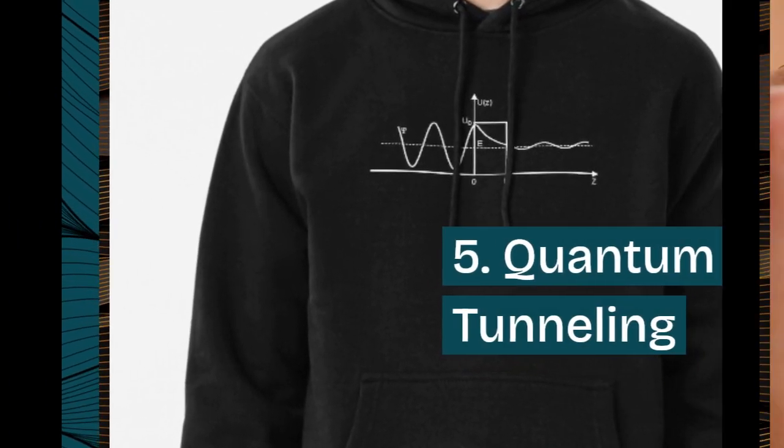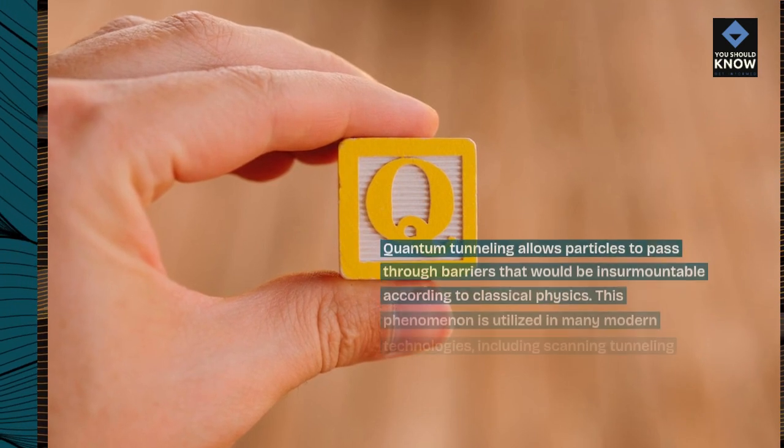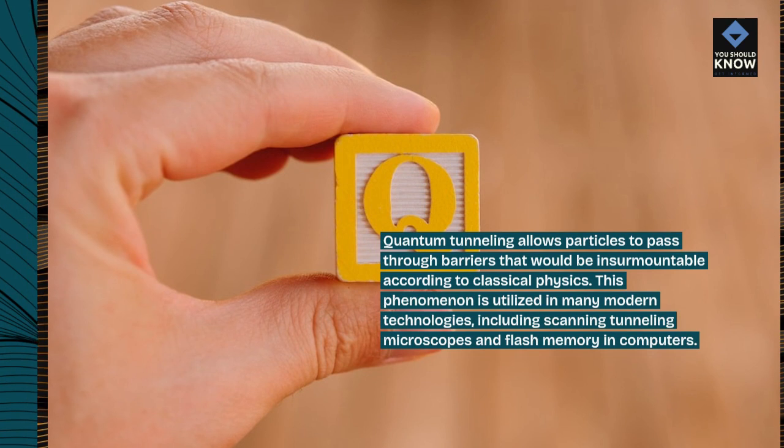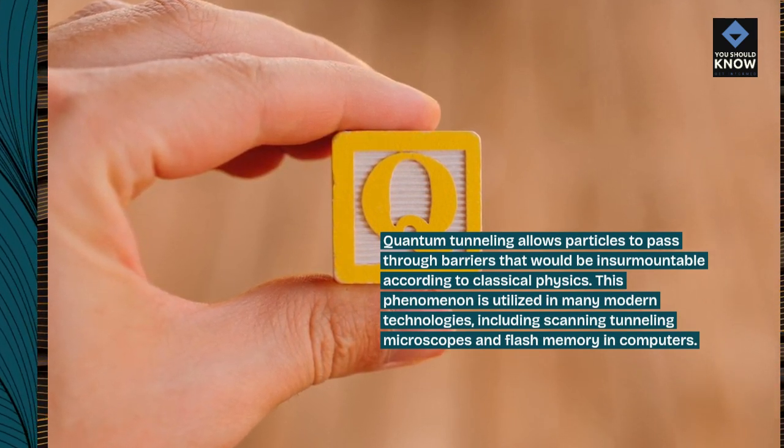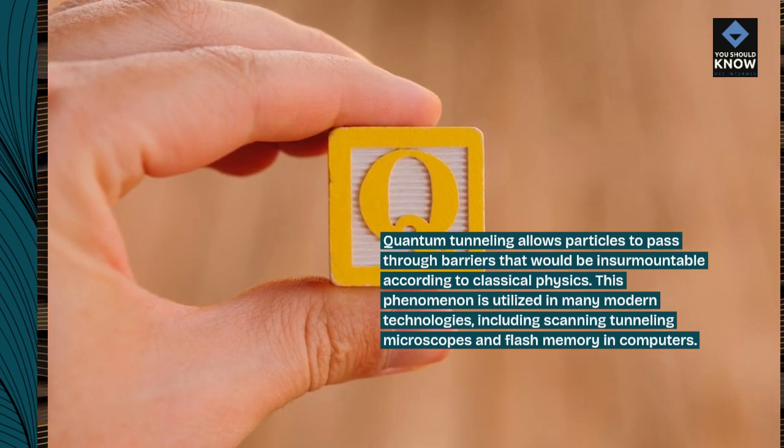5. Quantum Tunneling. Quantum tunneling allows particles to pass through barriers that would be insurmountable according to classical physics. This phenomenon is utilized in many modern technologies, including scanning tunneling microscopes and flash memory in computers.